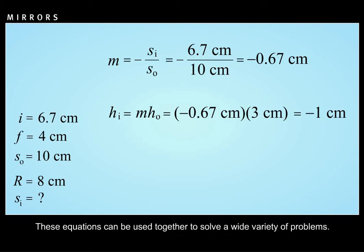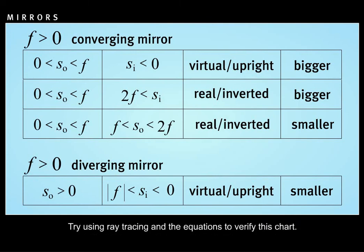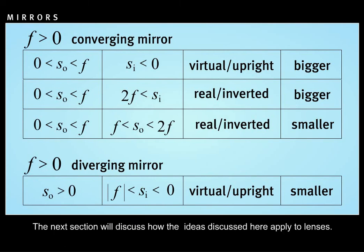These equations can be used together to solve a wide variety of problems. It is often useful to determine quickly where an image will be positioned and what its relative size and orientation will be. Try using ray tracing and the equations to verify the summary chart. The next section will discuss how the ideas discussed here apply to lenses.